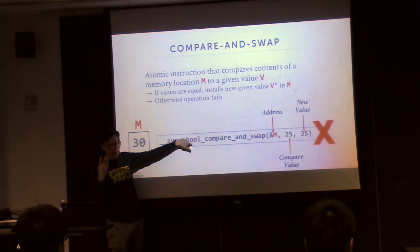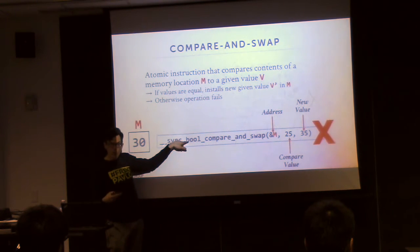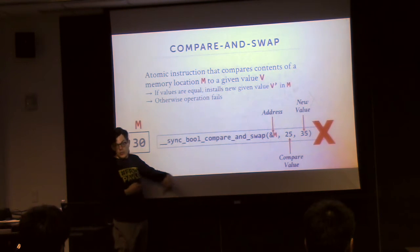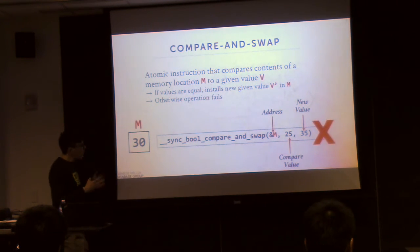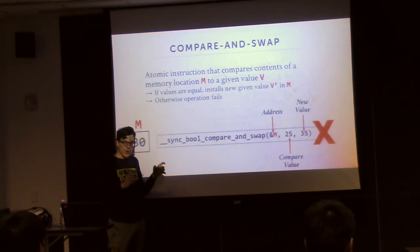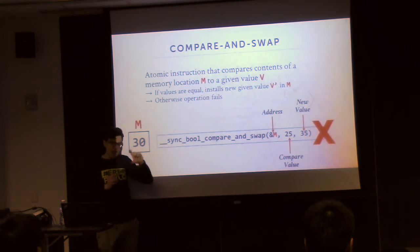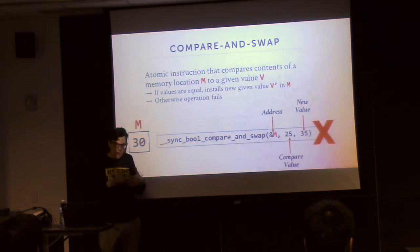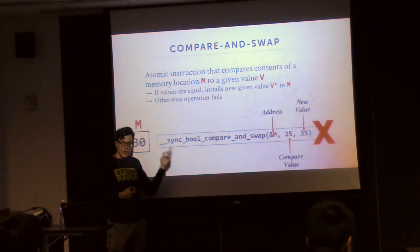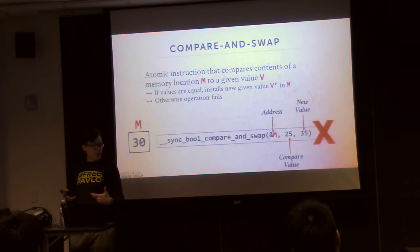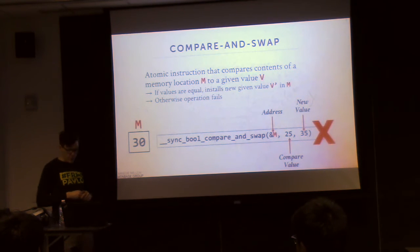There are other compare-and-swap implementations that, instead of returning true or false, return back what the current value is, and you can use that to figure out whether you succeeded or not. It's really important to understand this not only for Project 2, but also as we talk about how we actually implement MVCC and OCC, because the underlying principle to make it all work without setting locks is to use compare-and-swap. We can use this as a building block to do more complicated operations in our database system.